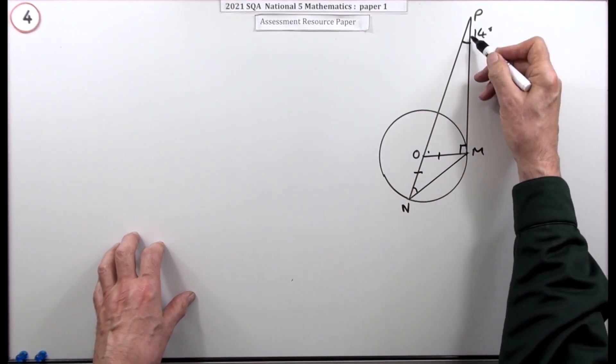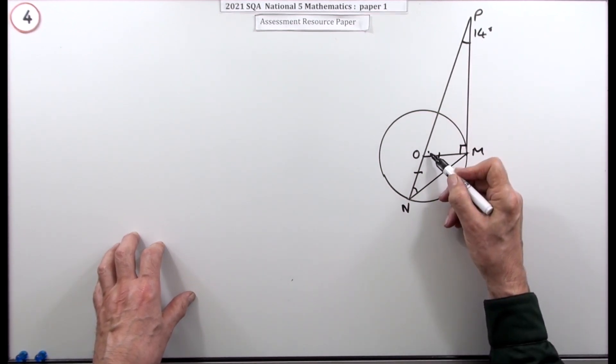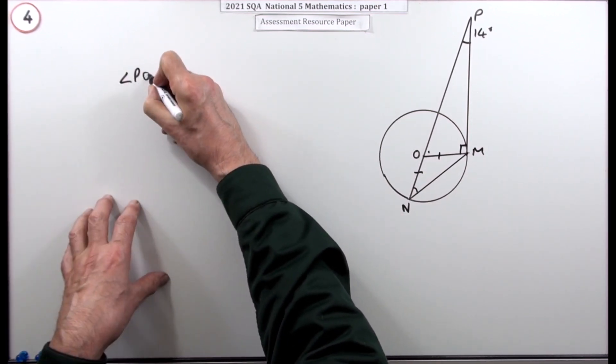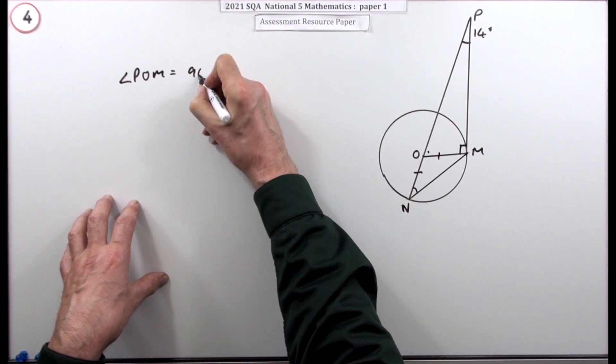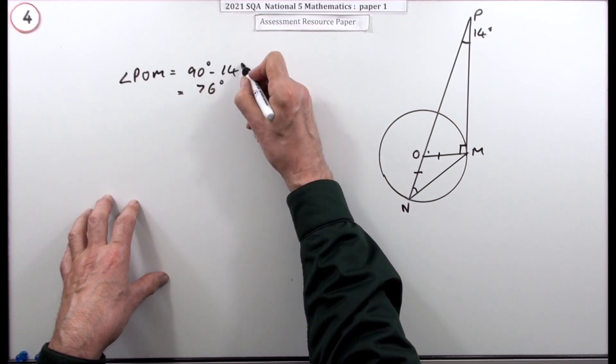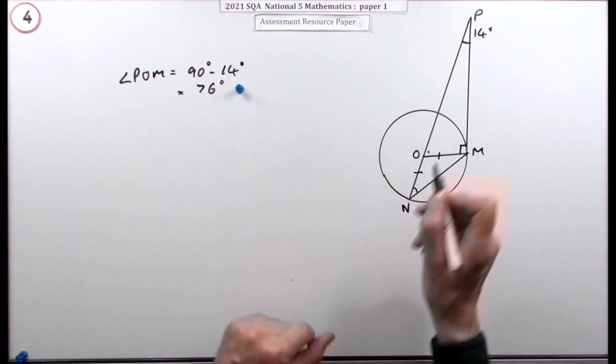You can get this angle here straight away because that's the complement of it. Angle POM would be 90 minus the 14, so that's going to be 76 degrees because you've got a right angle triangle.